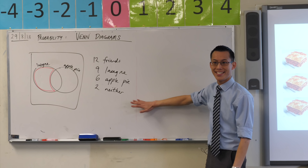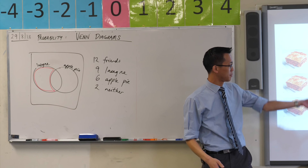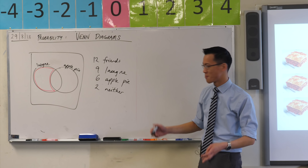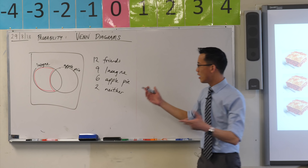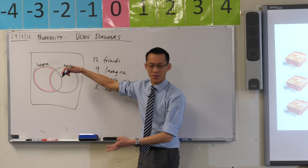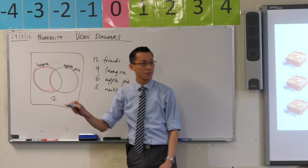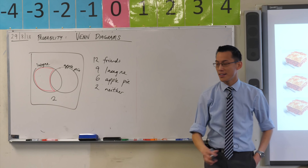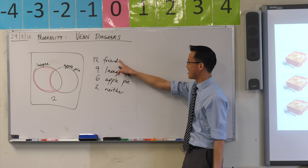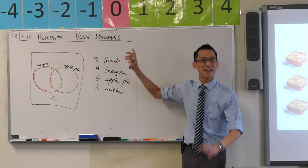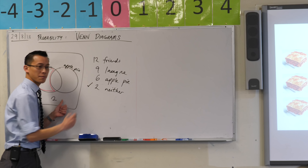So what piece of information might be easier to place directly? The 'neither' group — two people out of twelve who didn't eat either item. Where do they go on the diagram? Somewhere not inside the lasagna circle and not inside the apple pie circle — so on the outside. This big box we often call the universal set, meaning everyone in this 12-friend universe. So that's two people accounted for.